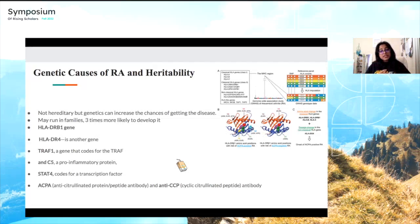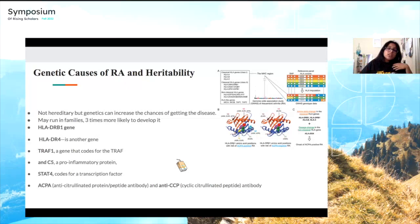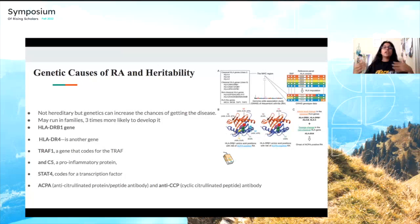The ACPA antibody is used for diagnosis — if you have it in your body, it suggests you may have rheumatoid arthritis. However, as shown in the image, you can be ACPA-positive or ACPA-negative and still have RA. It's just an indicator used in blood testing. Not having the ACPA antibody doesn't mean you're not capable of getting RA.